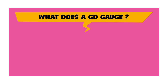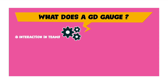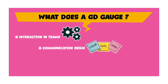Next, I'm going to talk about what does a GD gauge — what exactly is a panel looking for in you? The first one is your interaction in teams. The second is your communication skills. Communication skills is more than just talking impressively — in a group discussion, you're supposed to listen, pay attention, understand what others are saying, and then speak or put forward your point. We must pay attention to: listen, think, and then speak.